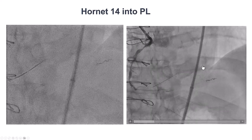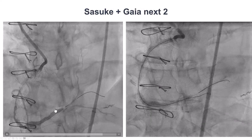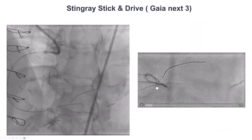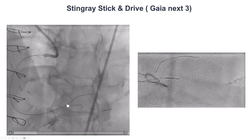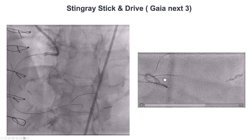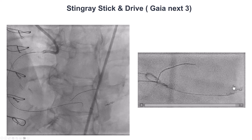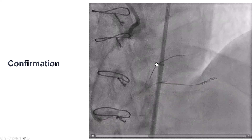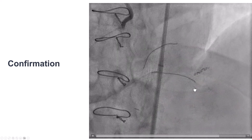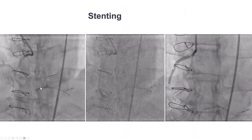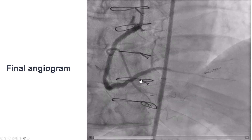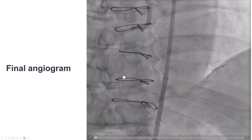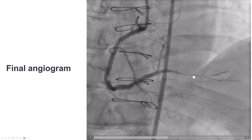A Hornet 14 was advanced into the right posterolateral. We then used a dual-lumen microcatheter to attempt re-entry more proximally. The stick-and-drive technique was performed with the stingray balloon and a Gaia Nex-3 guidewire, which advanced along the course of the vessel next to the previously coiled area. With good distal wire position confirmed, we ballooned and stented, making sure not to stent more proximally given the PDA occlusion. This resulted in good flow into the right posterolateral.